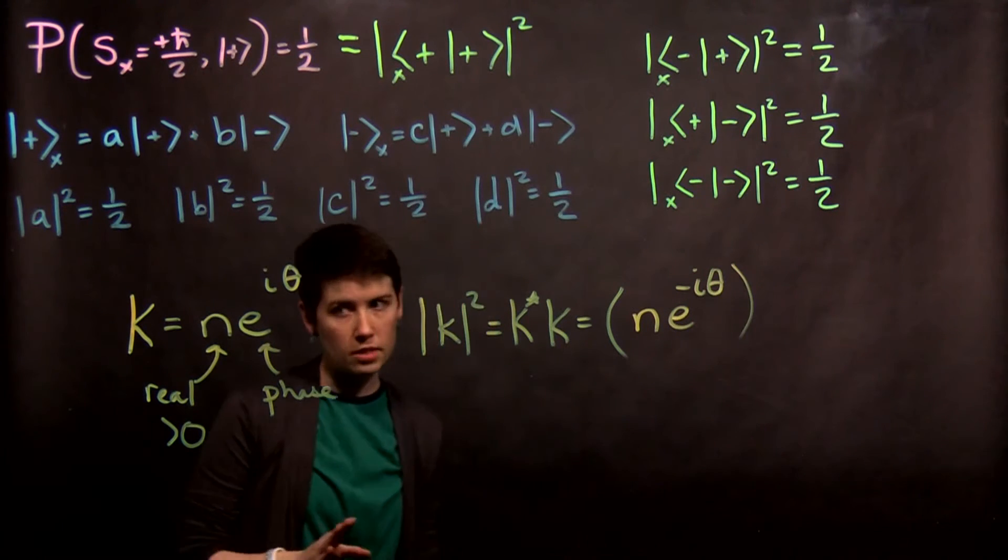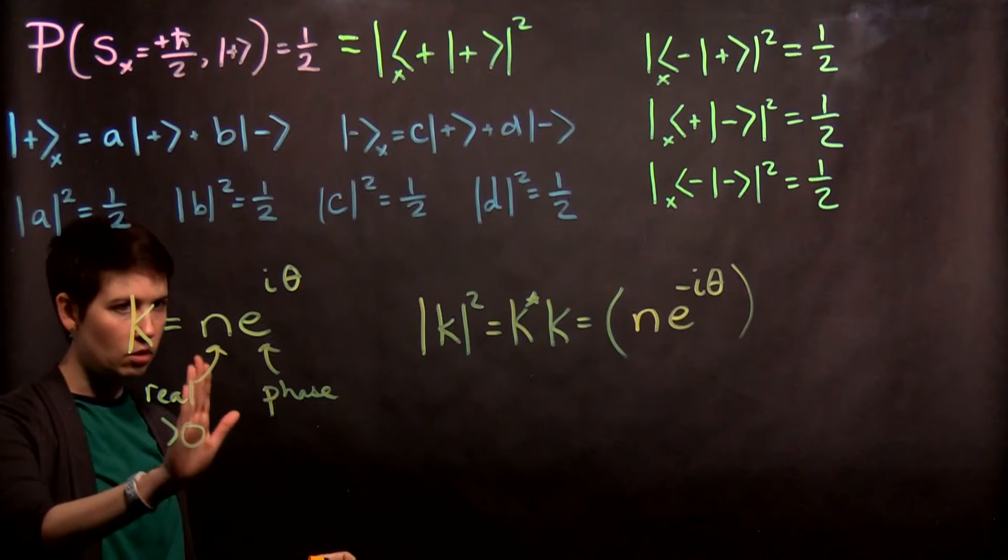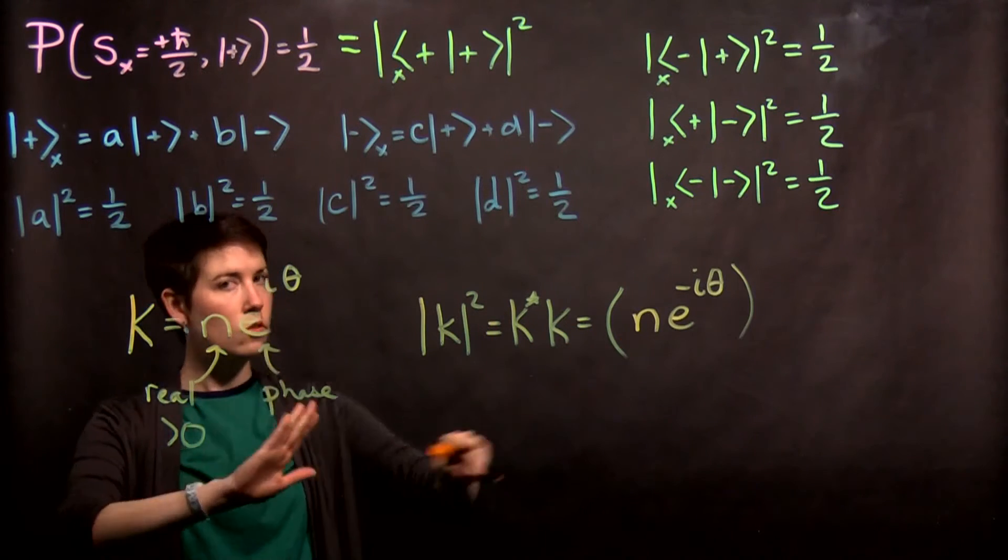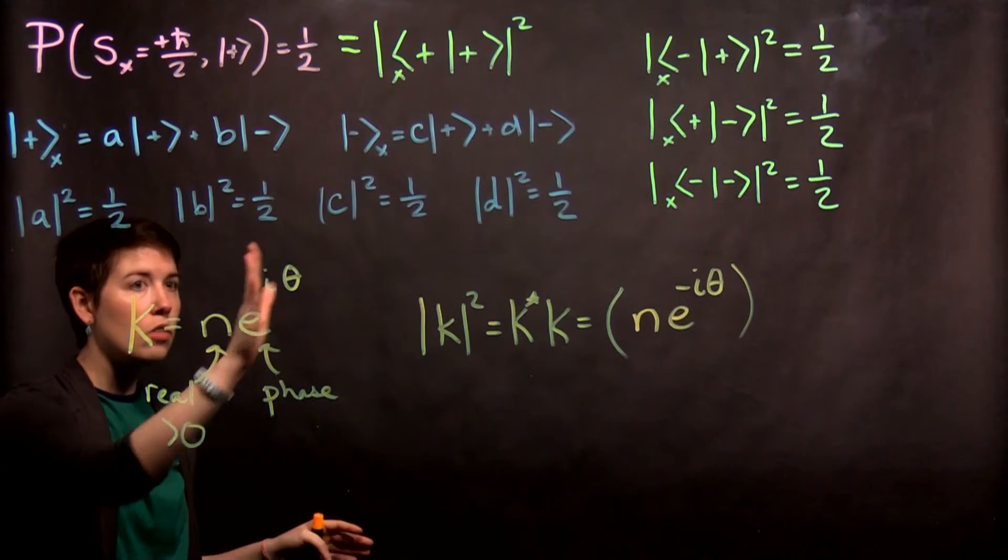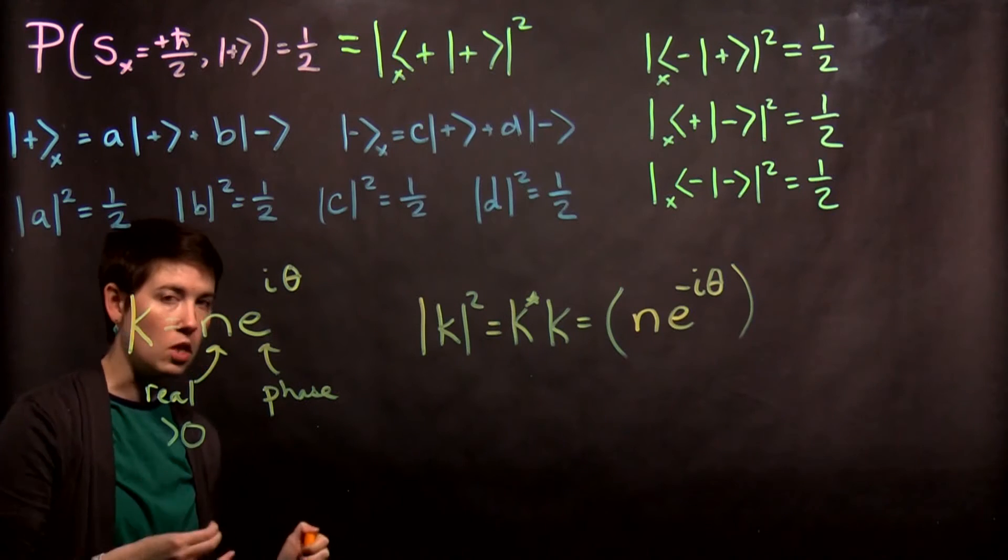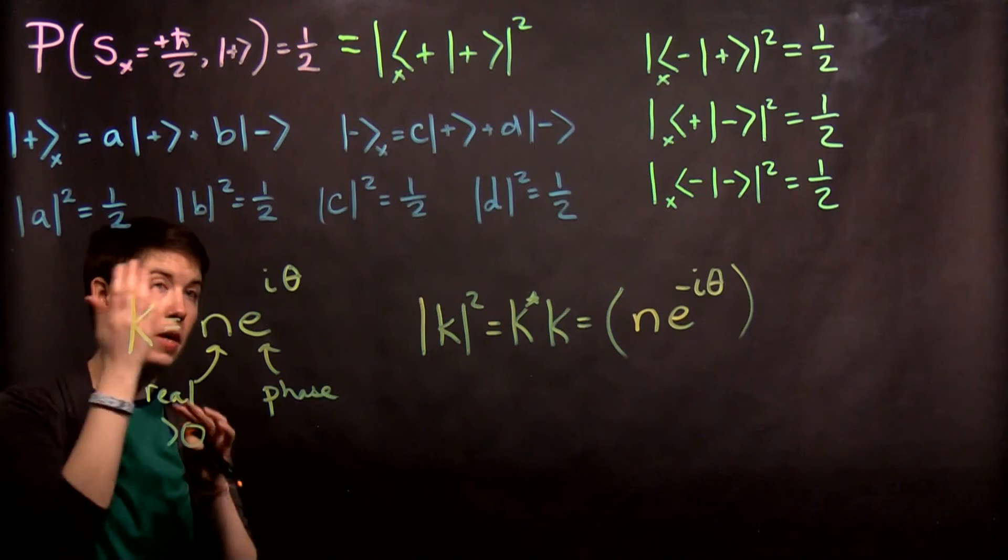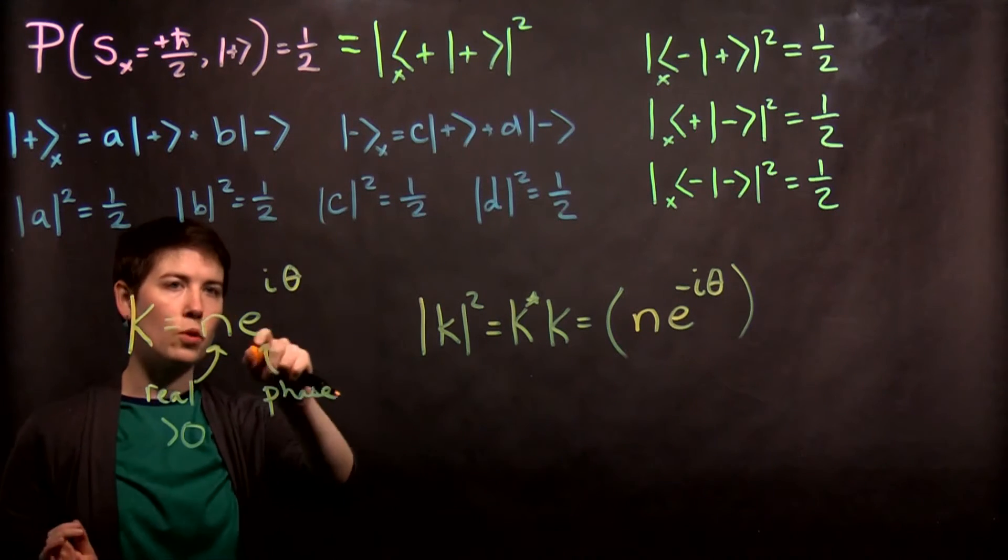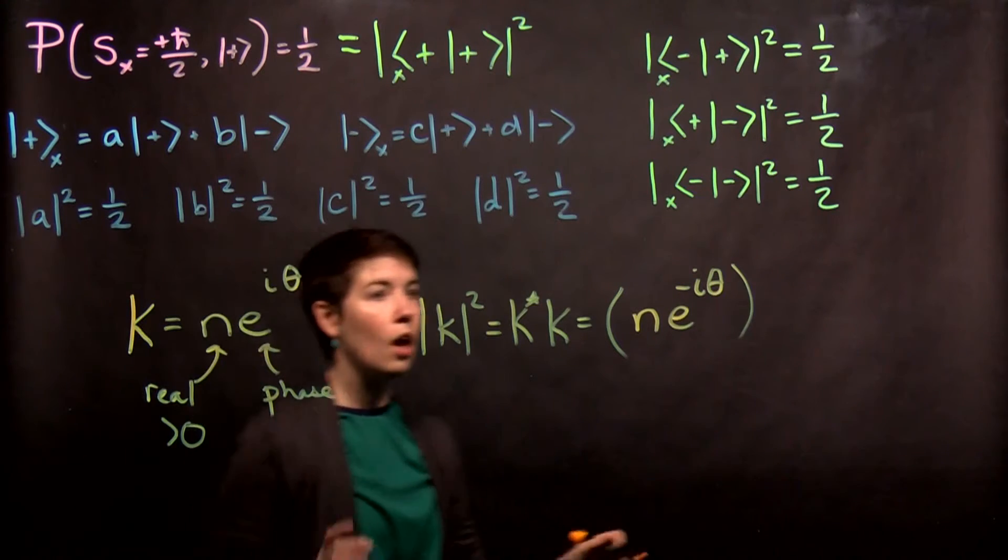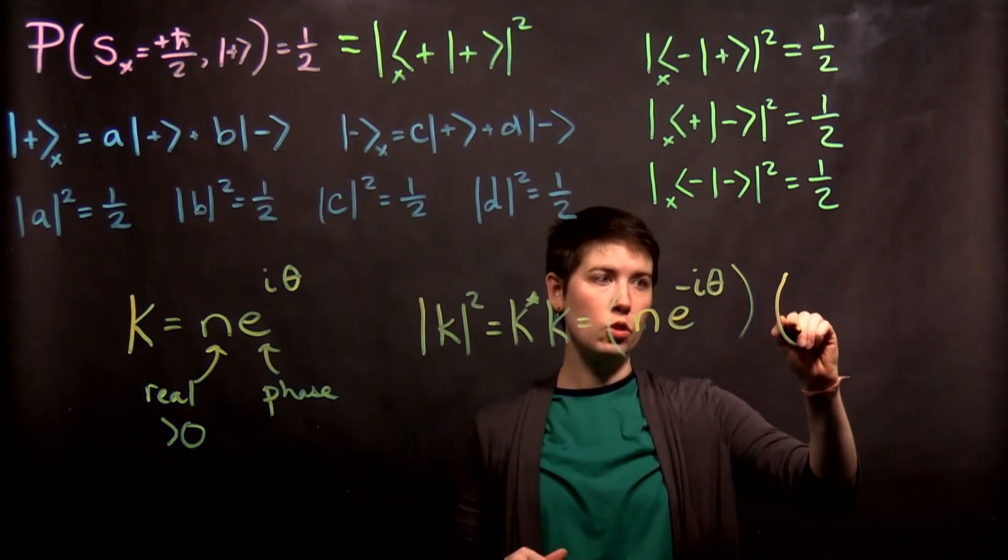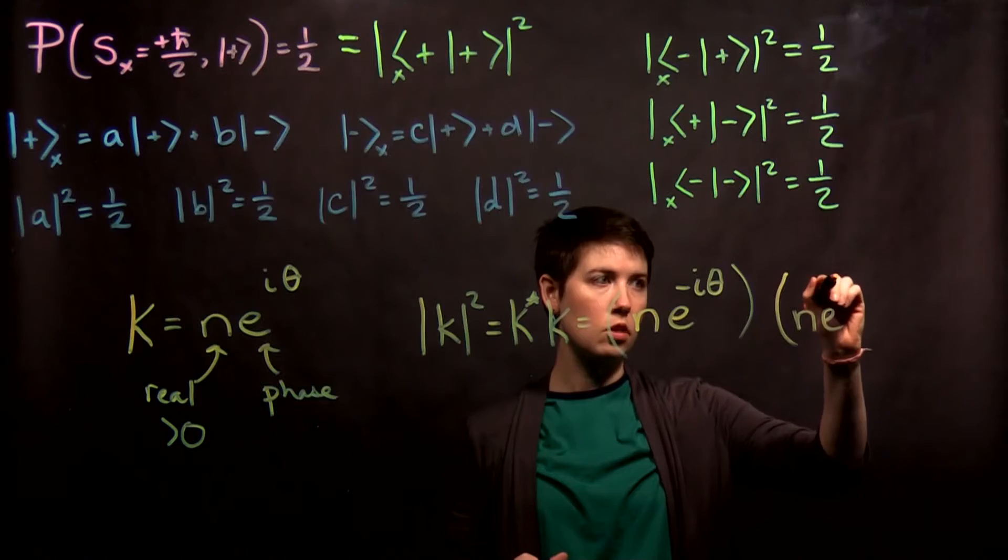And the reason we say that is, again, if we say that n is a real and positive number, then when we complex conjugate it, we still just have n. Then the phase, remember when we complex conjugate, we take anything that's an i and make it negative i. No difference when it's in this sort of form. And then k itself is our original number, n e to the positive i theta.